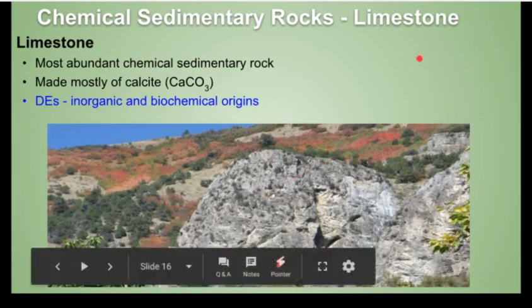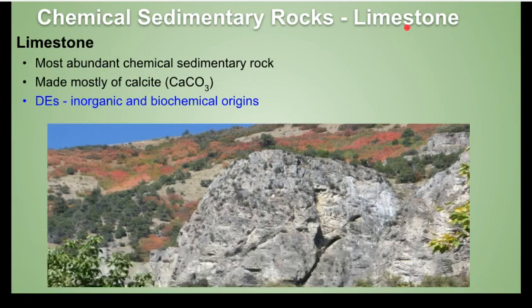We're going to talk about several different types of chemical sedimentary rocks. Let's start with limestone, which is one of the most abundant ones and one of my favorites. Limestone is made mostly of the mineral calcite, which is calcium carbonate. The depositional environments for limestone can include both inorganic and biochemical origins.